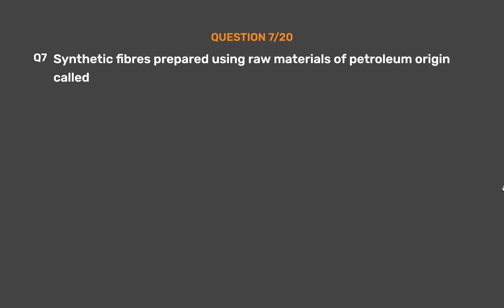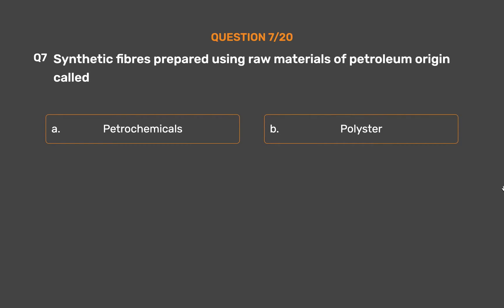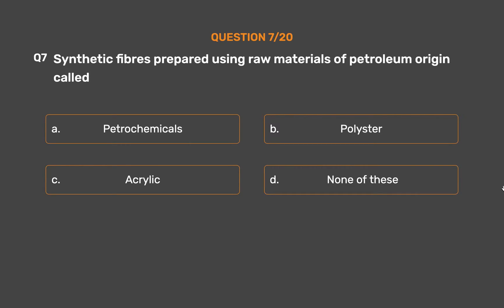Question Number 7. Synthetic fibers prepared using raw materials of petroleum origin are called ___. Option A: Petrochemicals. Option B: Polyester. Option C: Acrylic. Option D: None of these.